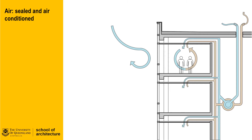Air conditioning of internal spaces is a necessary consequence of sealing our office workplaces. Though there is a degree of recirculation of air, mechanical systems work to exhaust stale air from work spaces and mix in fresh air from outside. If we used a full fresh air system which required conditioning, the energy use of the mechanical system would be extreme. A conditioning process that regulates the mix of recycled and fresh air is usually deployed to maximise mechanical efficiency.